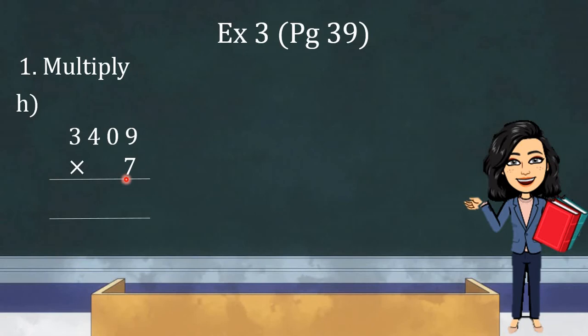Now, kids, here we have to multiply a 4 digit number with one digit number. Let us first write the places on the top as we did earlier in the questions of addition and subtraction. Now, kids, here we have to multiply a 4 digit number with one digit number, right? So, that means we will multiply all the 4 digits of 3,409 individually with 7, one by one.